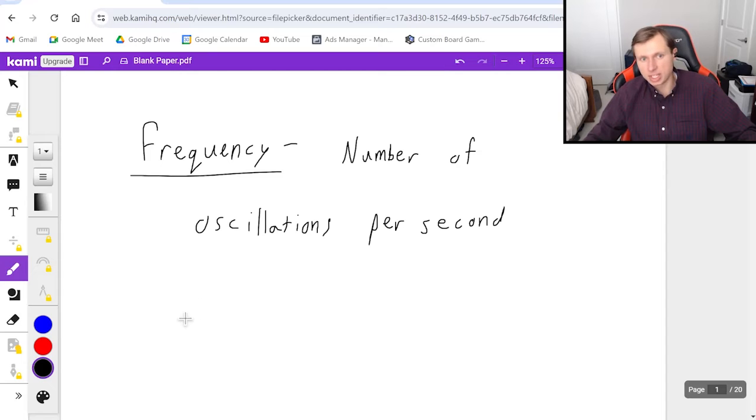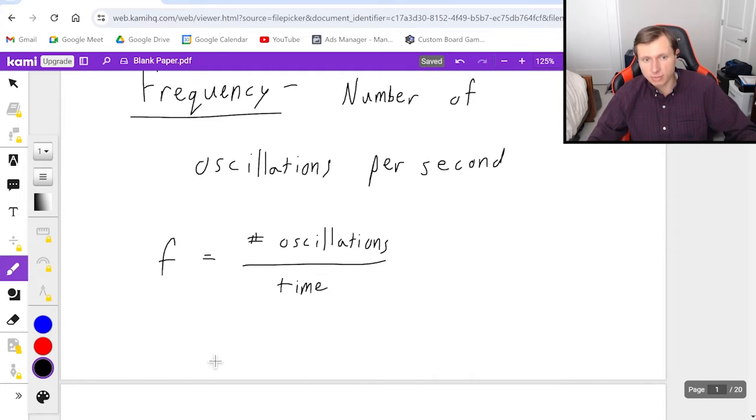And so the equation for frequency, first of all we use lowercase f for frequency. It is defined as the number of oscillations divided by your time. In other words, what you could say is frequency is equal to one over T the period, or you could even write T the period is one over the frequency.